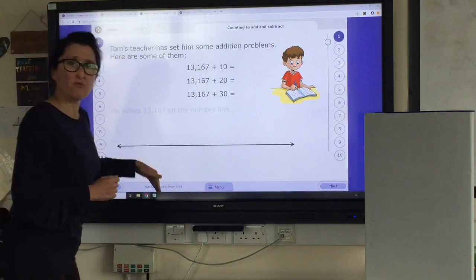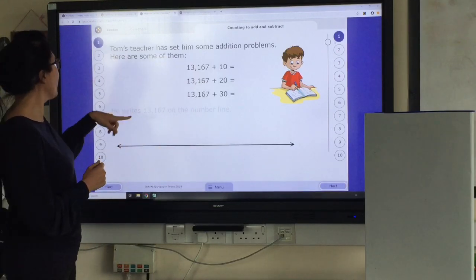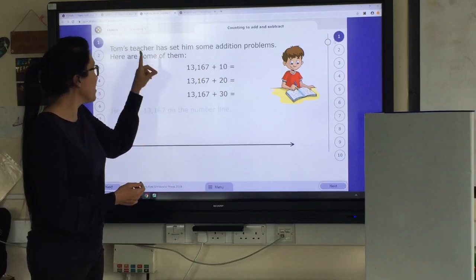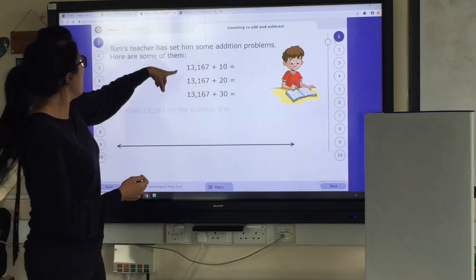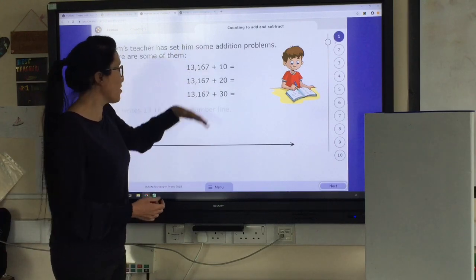Right, I'm going to whiz through the first few bits of this because I think it's quite easy. And I think you'll be fine with it. But Tom's teacher is setting some addition problems and here are some of them. So we've got some big numbers, 13,167 and we're adding on either 10, 20 or 30.